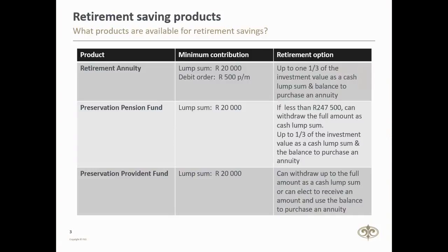At retirement age, which is 55 years and older, the retirement options for each of these products does differ. With these products, you're not forced to retire when you reach the age of 55 — this is just the age at which you have the option to retire. With the retirement annuity and the preservation pension fund, at retirement you can take up to one third of the value as cash, and the balance must then be used to purchase an annuity. If the value is less than 247,500 Rand, you have the option to take the full value in cash. With the preservation provident fund, however, you have the option to take the full value as cash, or take a portion as cash and use the rest to purchase an annuity, or even use the full amount to purchase an annuity.